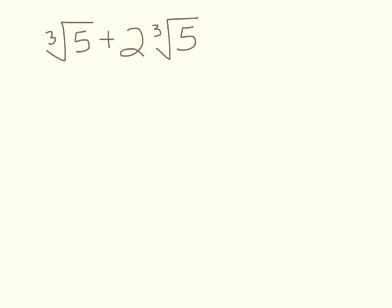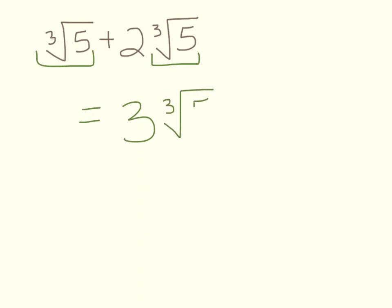Here we have the cube root of 5 plus 2 cube roots of 5. This is an addition problem, and you can only add radicals when they are the same. Think of it like 1 chicken plus 2 chickens — you have 3 chickens. So the answer is 3 cube roots of 5.